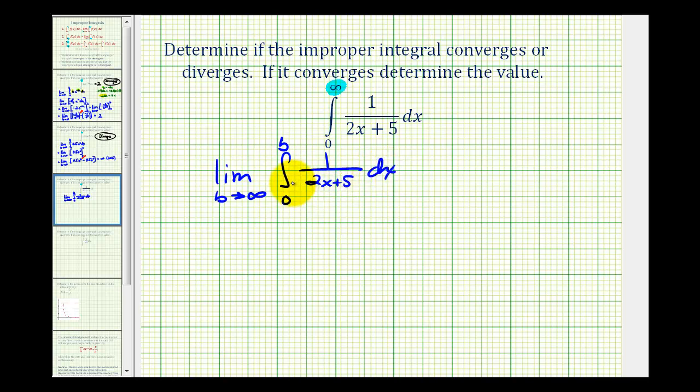Now we'll evaluate this definite integral and then determine the limit. This integral is going to require u substitution where u is going to be equal to two x plus five. So now we have one over u, but now we'll determine differential u. Differential u is going to be equal to two dx.